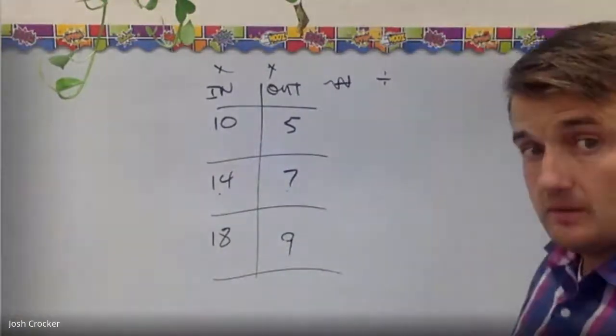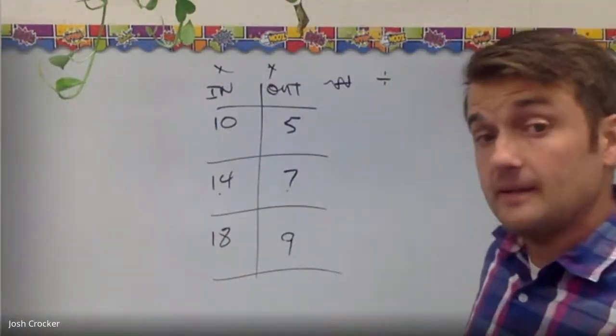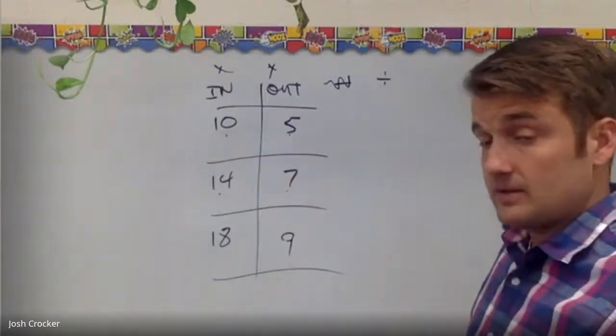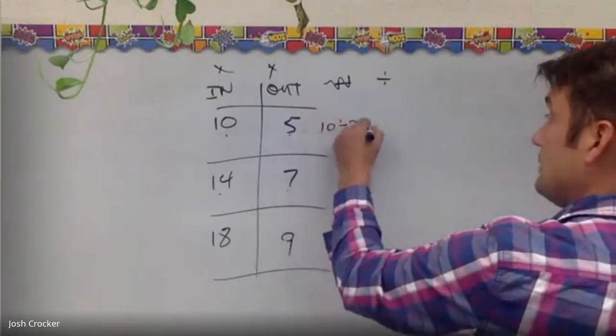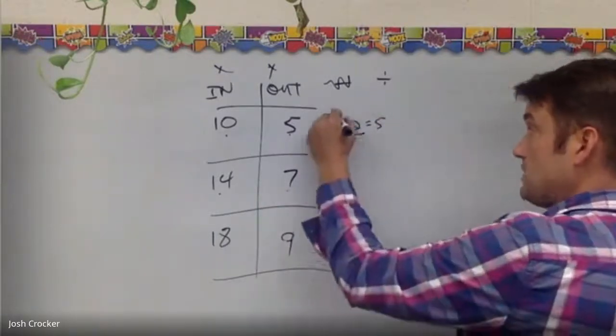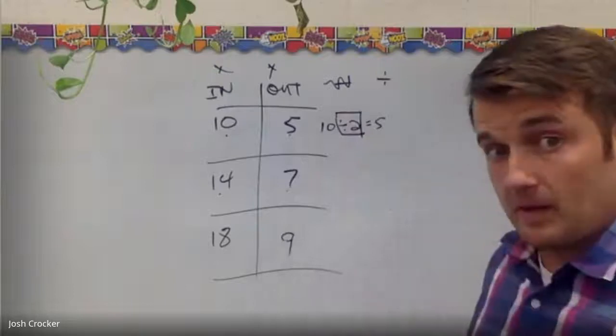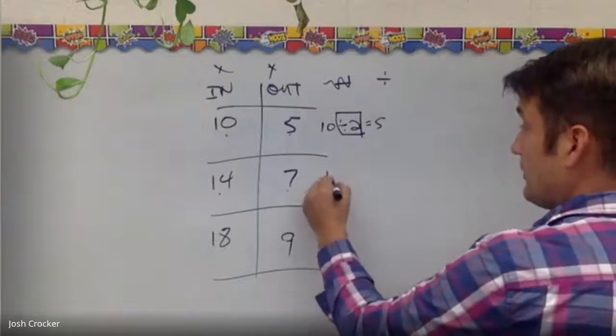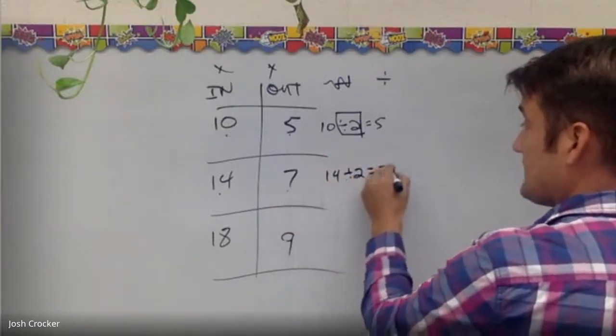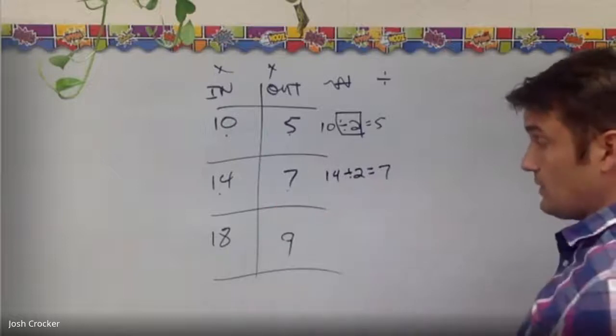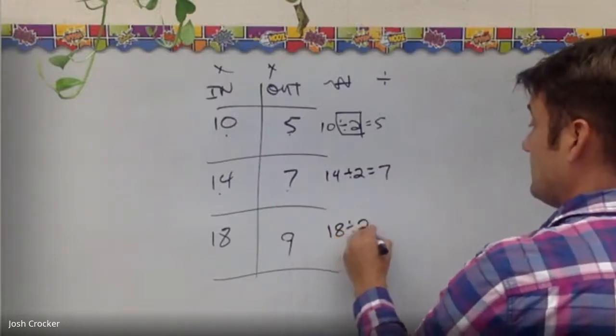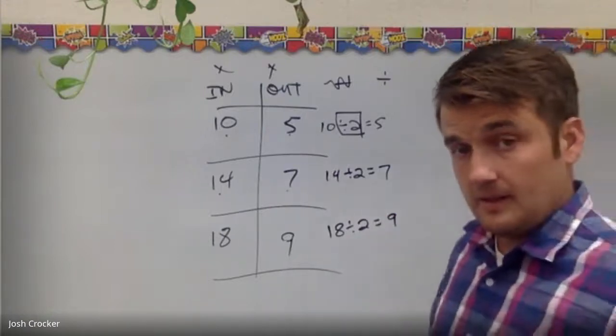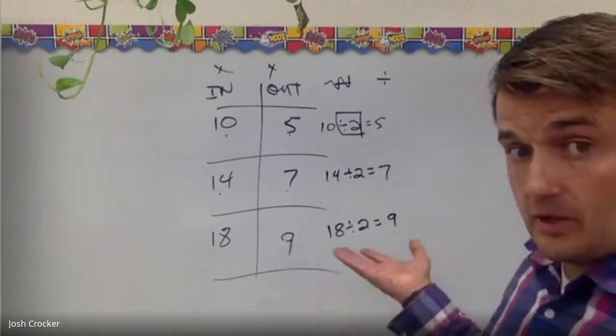So now I need to figure out dividing by what, right? Well, how many 5's does it take to make 10? It takes two 5's, so 10 divided by 2 is 5. Divide by 2 might be my rule, but I need to check it to make sure. And as I go through, 14 divided by 2, yeah, that's 7. 7 times 2 is 14. 18 divided by 2 is 9, because 9 times 2 is 18. So, that's what division function machines will look like.